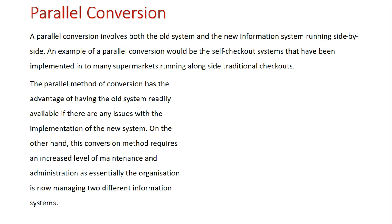The next conversion method is the parallel conversion method, in which both the old and new system are run side by side. An example of a parallel system would be the actual self-checkout terminals at the grocery store — we have these new self-checkout terminals, but we still have the traditional checkouts with the employee behind the counter, also scanning things and aiding us at the shopping center as well. So, two systems running side by side. The parallel conversion method has the advantage of having the old system readily available if there are any issues with the implementation of the new system. Though, on the other hand, the conversion method requires an increased level of maintenance and administration, essentially because you're running two systems.